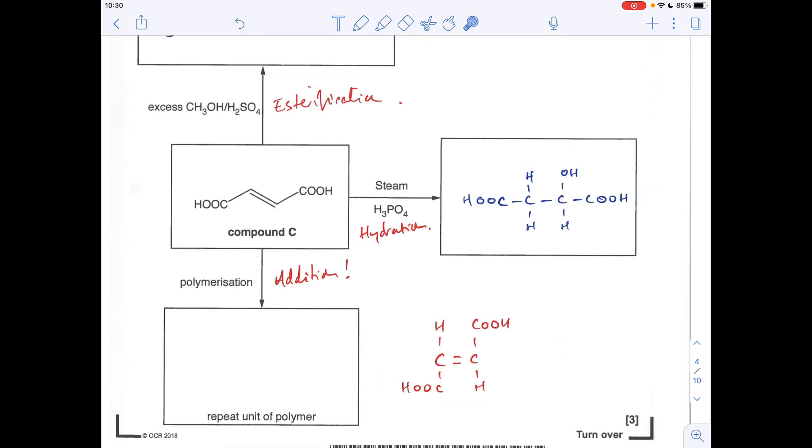And the final reaction, the polymerization of compound C. Notice it's got a carbon-carbon double bond. So we'll get addition polymerization. So my top tip is always try and make your monomer look like an ethane molecule, which is what I've done there. And it makes drawing of the polymer repeat unit much, much easier.